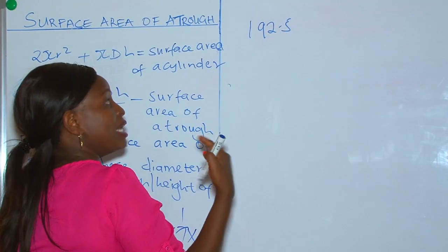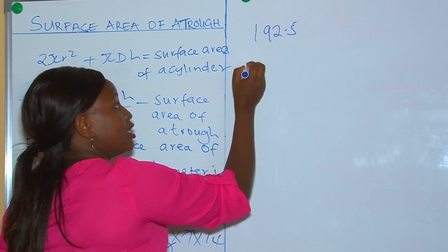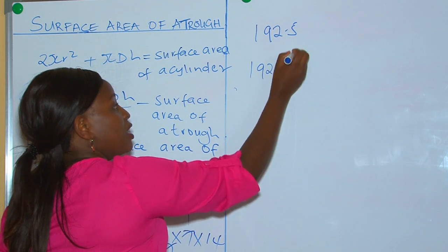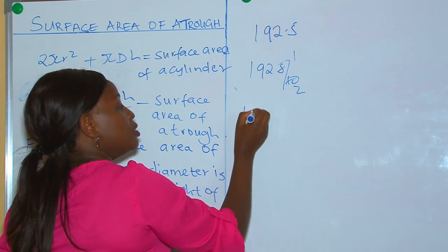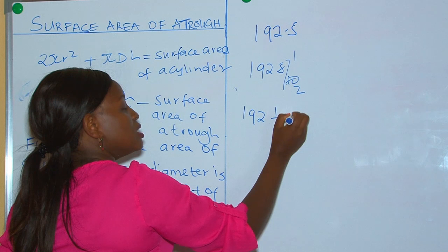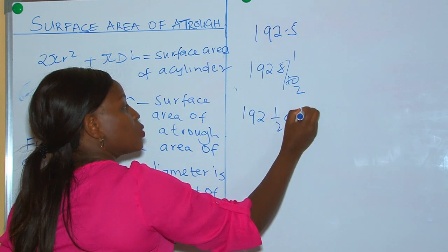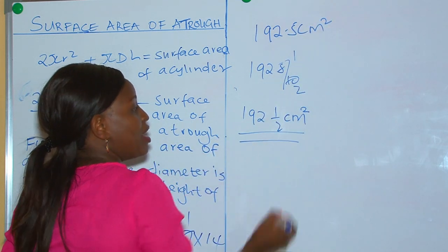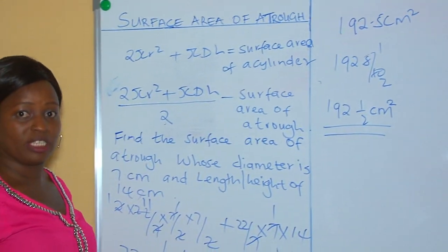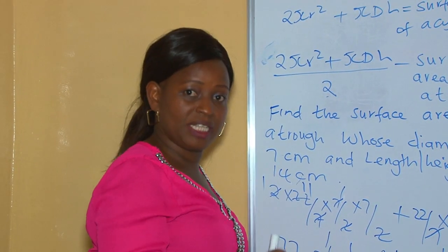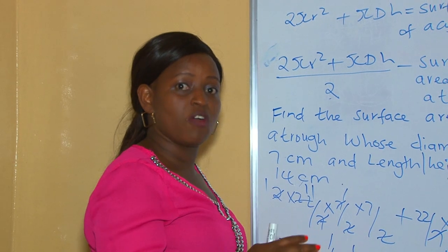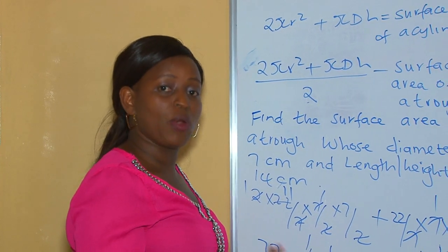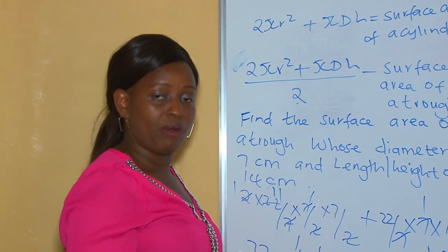Or we can express this as a fraction: 192 and a half centimeters squared. These are centimeters squared. And there we have the surface area of the trough. Remember, a trough is half of a cylinder — it is just the surface area of a full cylinder divided by 2. And now we are able to get our formula and solve the problem.